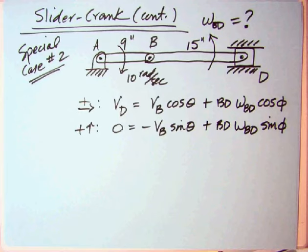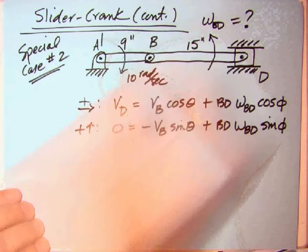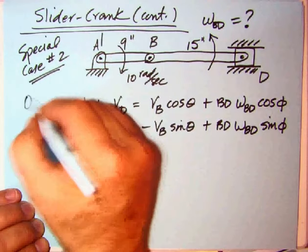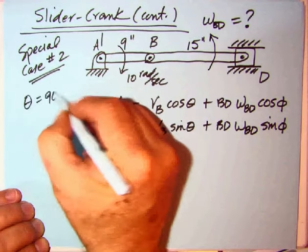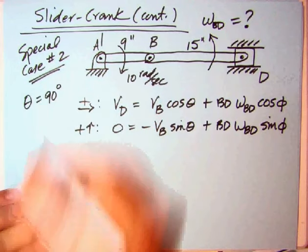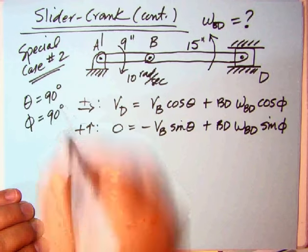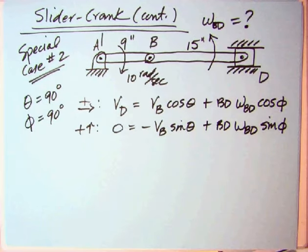Let's write out the equations again. Theta is measured from the vertical, so theta equals 90 degrees. And phi is measured back around, so in this case phi equals 90 degrees. Both are 90 degrees.